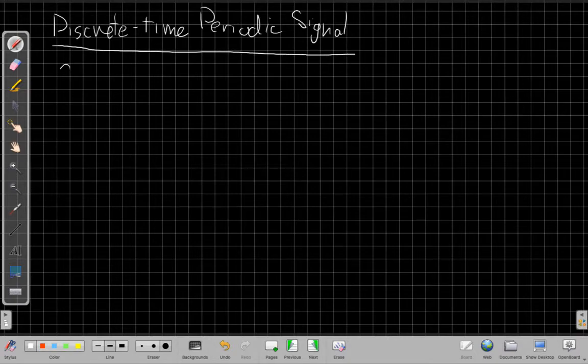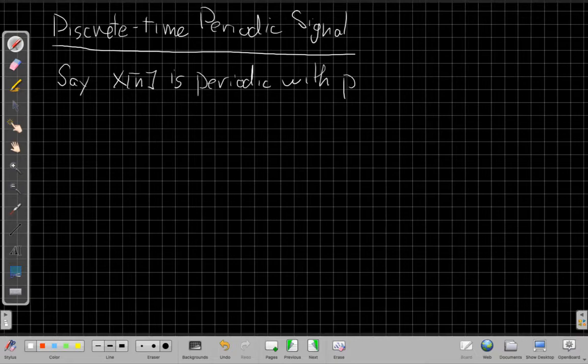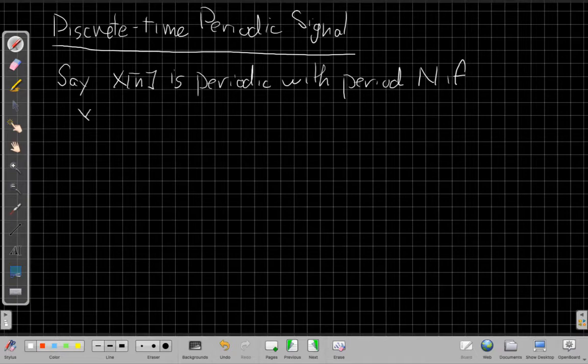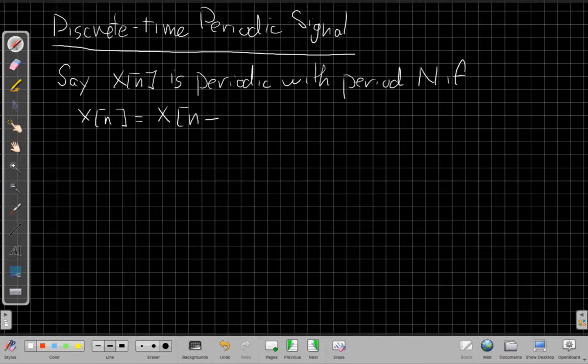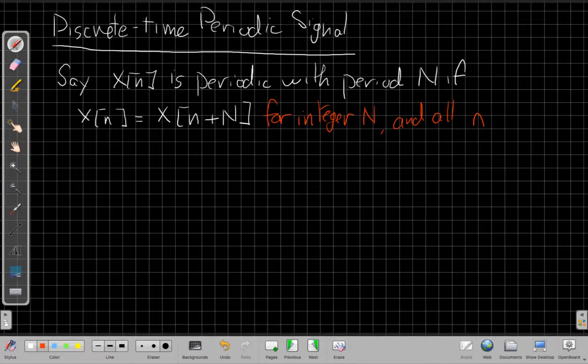We say that the signal X[n] is periodic with some period capital N if X[n] equals X[n + N], and this is important enough I'll write it in red: for integer N and also at all n.